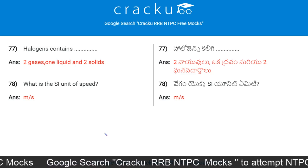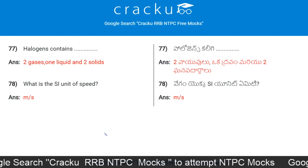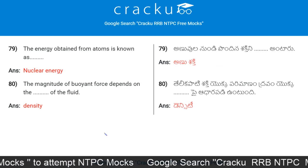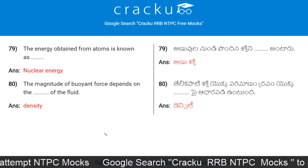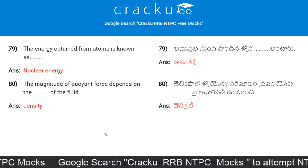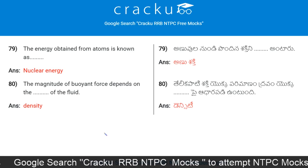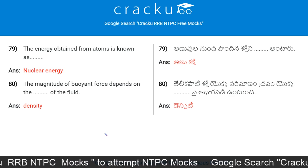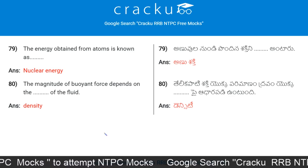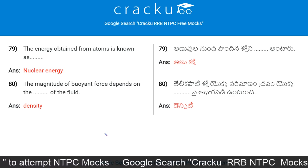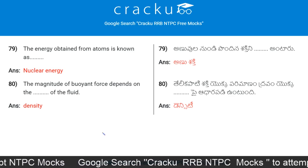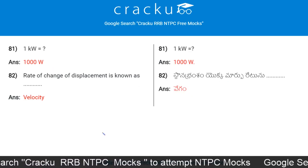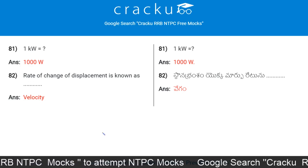The SI unit of speed is metre per second. The energy obtained from atoms is known as nuclear energy. The magnitude of buoyant force depends on the density of the fluid. One kilowatt is equal to one thousand watts.